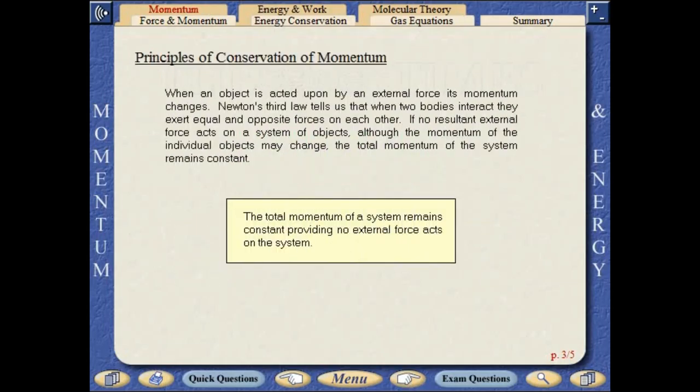When an object is acted upon by an external force, its momentum changes. Newton's third law tells us that when two bodies interact, they exert equal and opposite forces on each other. If no resultant external force acts on a system of objects, although the momentum of individual objects may change, the total momentum of the system remains constant.